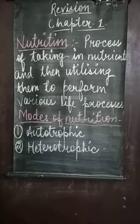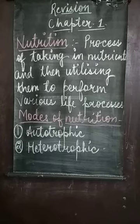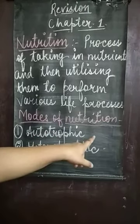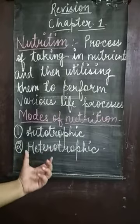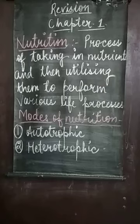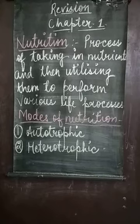On the other hand, organisms like animals and humans depend directly or indirectly on plants for their food. That is why they are known as heterotrophs, and the mode of nutrition by which they get their food is known as heterotrophic mode of nutrition. So autotrophs take food through autotrophic nutrition, and heterotrophs take food through heterotrophic nutrition.